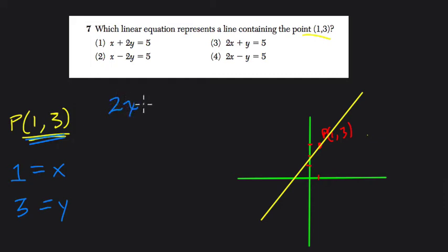So choice 3 is 2x plus y equals 5. Well, if I plug in x, that's 2 times 1, right? Plus y, well, y is equal to 3, and there we get it, right? 2 times 1 is 2 plus 3, and this should equal 5, which it does.